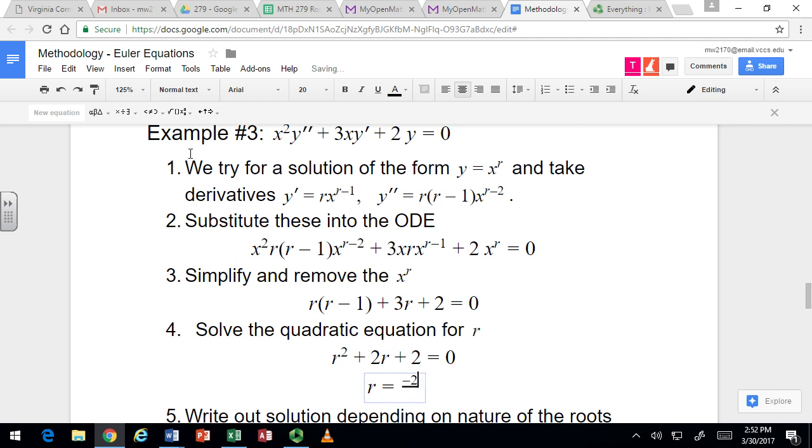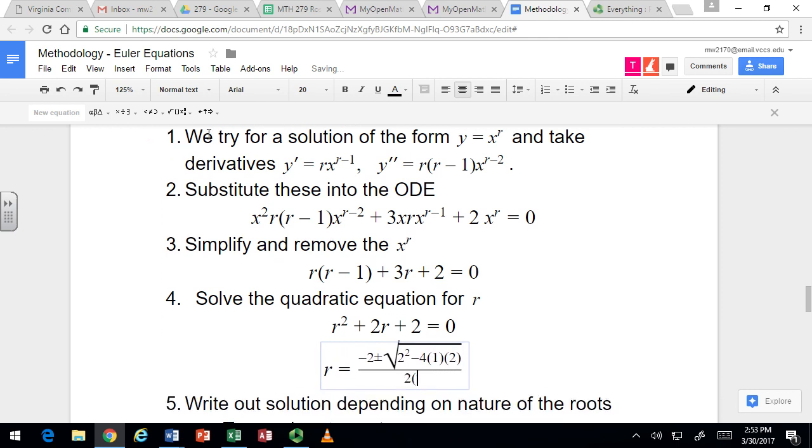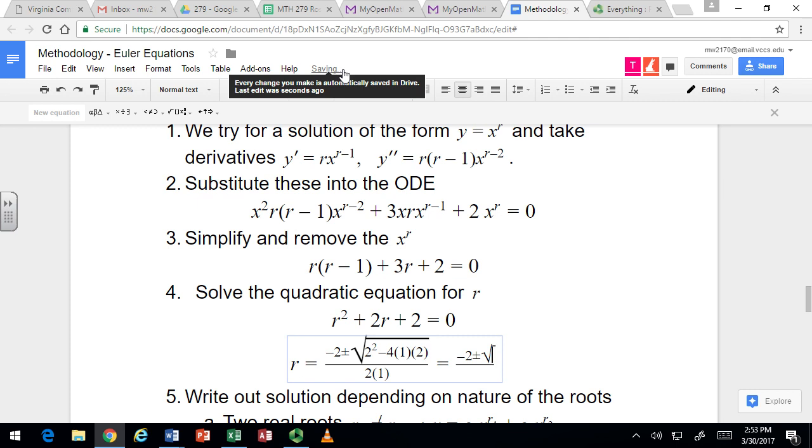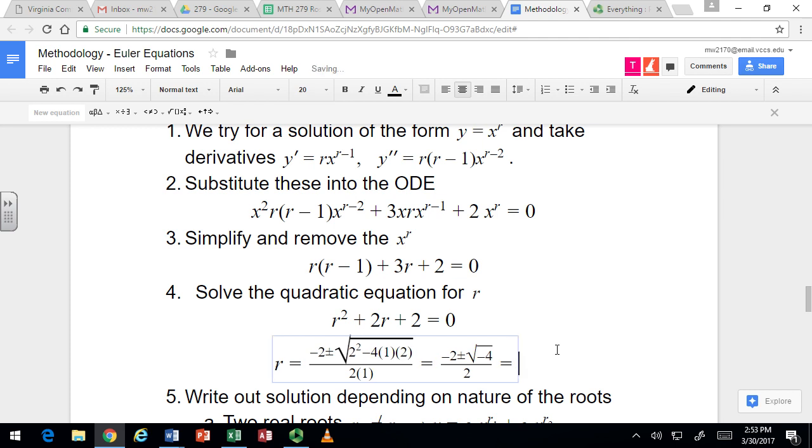So minus 2 plus or minus square root of 2 squared minus 4 times 1 times 2 all over 2 times 1. Which we can simplify to get minus 2 plus or minus square root of - this is going to be 4 minus 8, which is negative 4. So we've got negative 2 over 2 is negative 1, square root of negative 4 is 2i, 2i over 2 is i. So negative 1 plus or minus i.